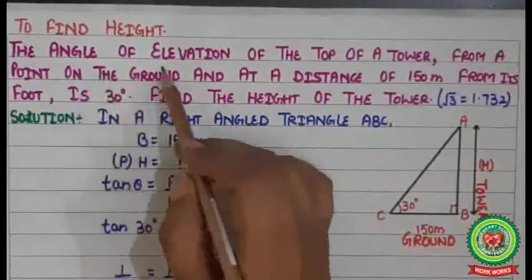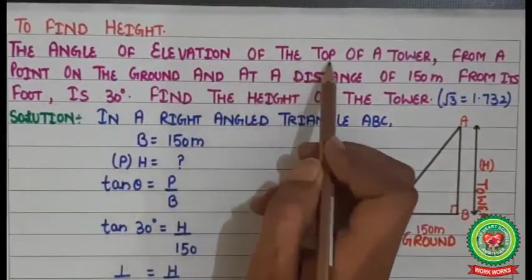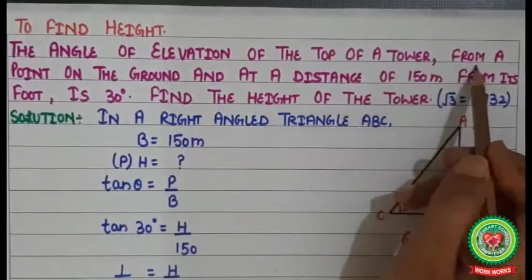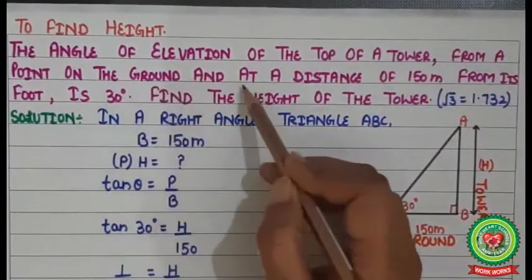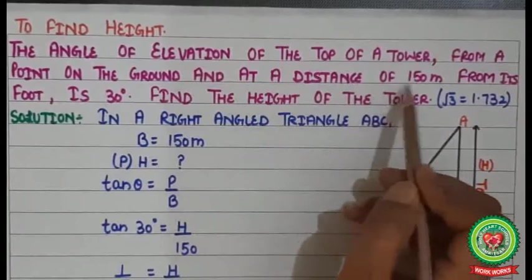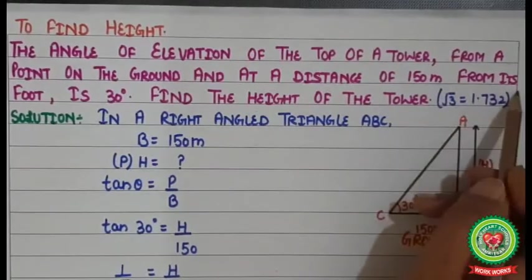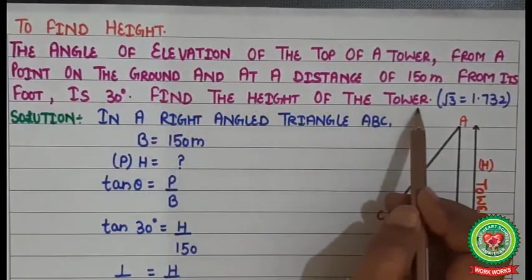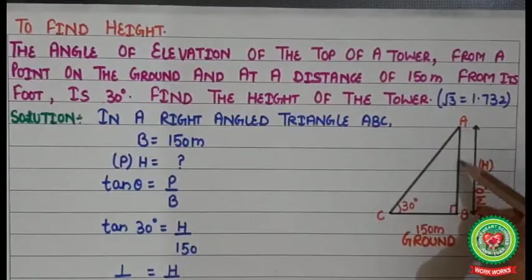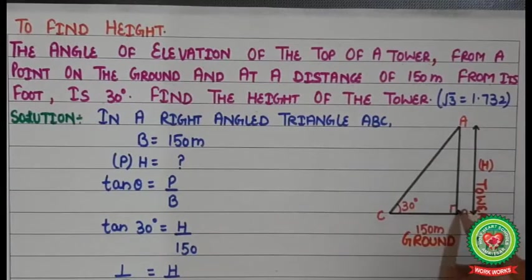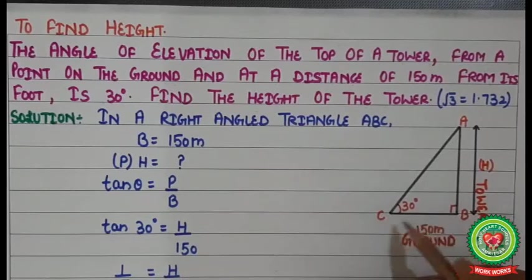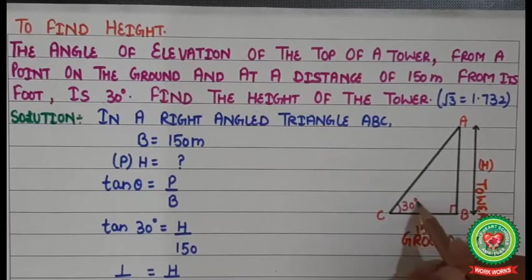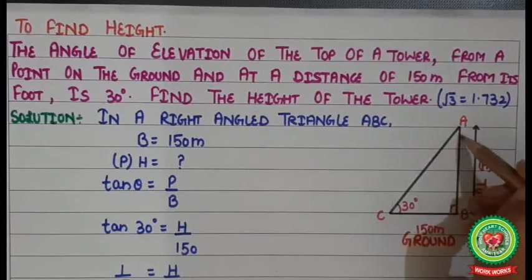Question number 1: The angle of elevation of the top of a tower from a point on the ground, at a distance of 150 meters from its foot, is 30°. Find the height of the tower. This is the tower, the observer is at a distance of 150 meters from the foot, and it makes an angle of 30° with the ground. We need to find the height of the tower.